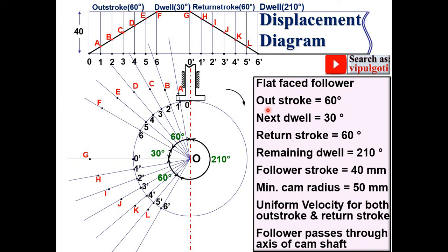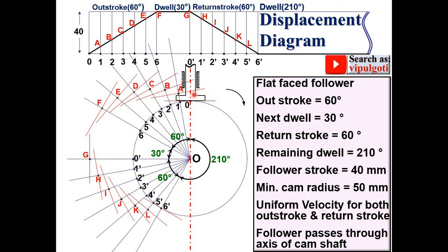Since a flat face follower is given, draw a line passing through each of the points a, b, c, d, e, f, g, h, i, j, k, l which is perpendicular to the corresponding radial (blue) line — like a tangent line at each point. Keep in mind this red line is perpendicular to the corresponding blue line, which you can do with the help of a protractor. Do this similarly for the return stroke. The length of each line is generally 1 cm on both sides of the blue line. Now draw a smooth curve that is tangent to all these red lines. From the last return stroke point back to 0, draw the arc using a compass. This is the cam profile.